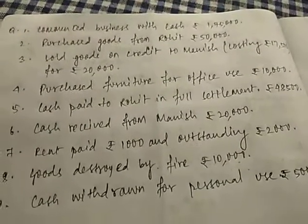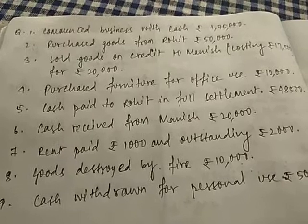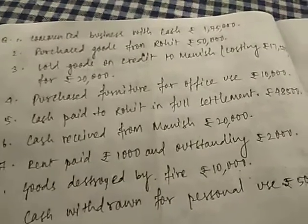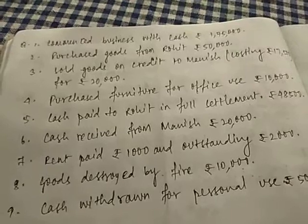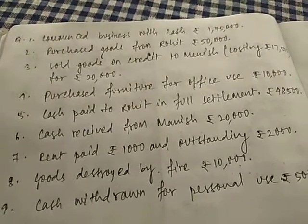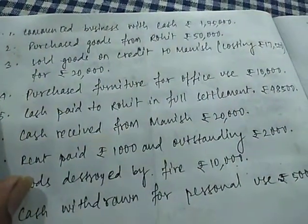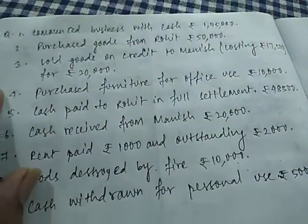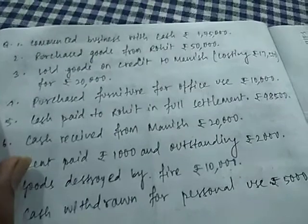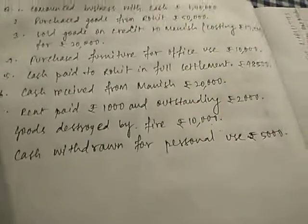Commence business with cash Rs. 1,75,000. Purchase goods from Rohit Rs. 50,000 — that means this is a credit purchase. Next is sold goods on credit to Monies, costing Rs. 17,500, for Rs. 20,000. Next is purchase furniture for office use Rs. 10,000.